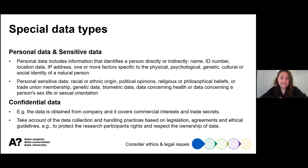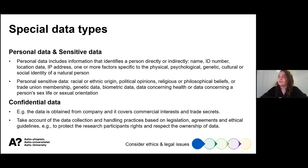Sensitive data consists of racial or ethnic origin, political opinions, religious or philosophical beliefs, trade union membership, genetic data, biometric data, data concerning health, or data concerning a person's sex life or sexual orientation — these are specific categories to be aware of. You might also be working with confidential data coming from a company, which may include trade secrets or things of commercial interest. These need to be considered to protect the rights of research participants and to respect the ownership of the data.